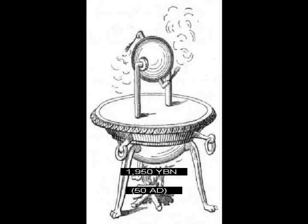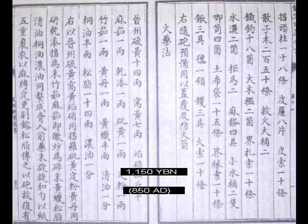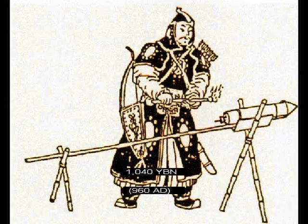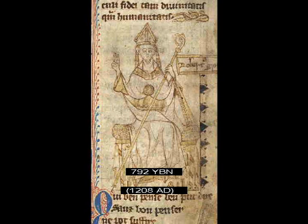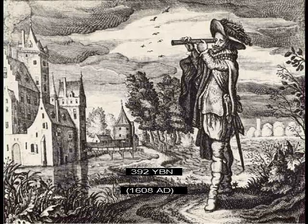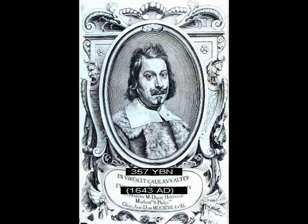Theory that light is an atom. Steam engine. Gunpowder. Rocket. Gun. Theory that all matter is made of light. Telescope and microscope. Moons of Jupiter seen. Vacuum.